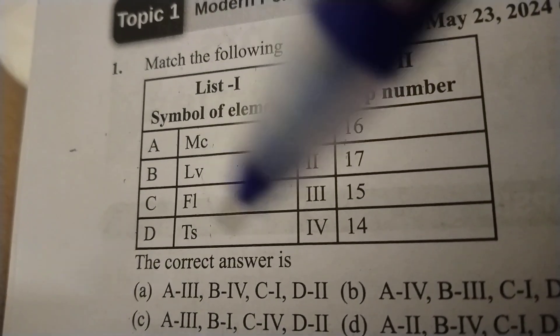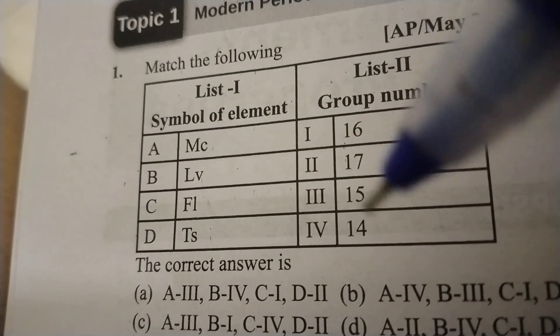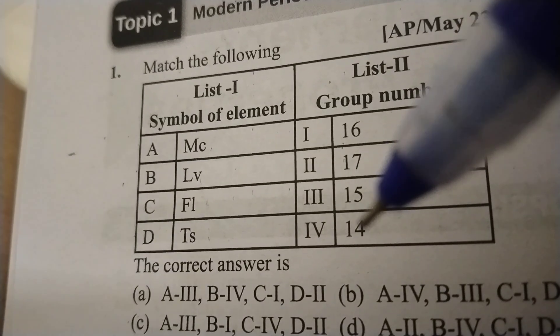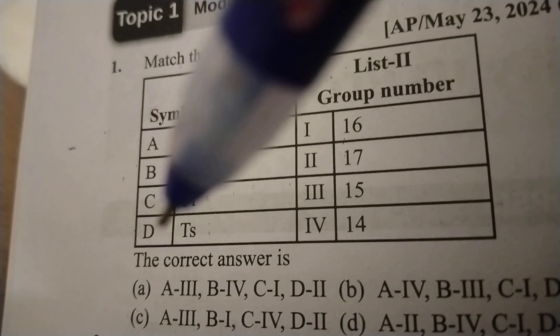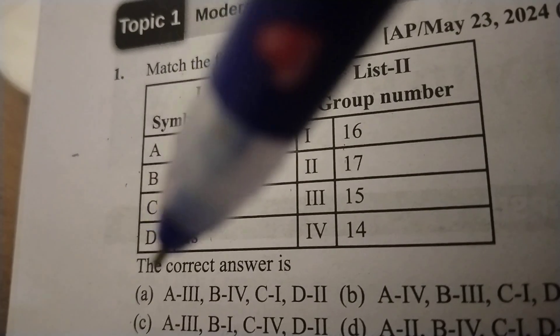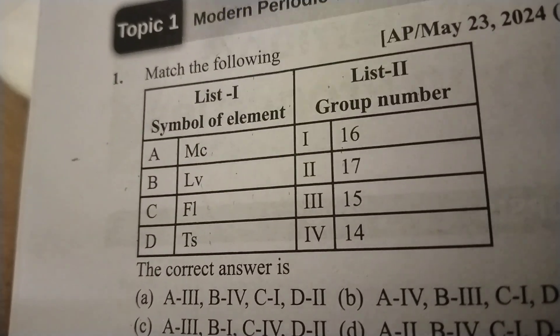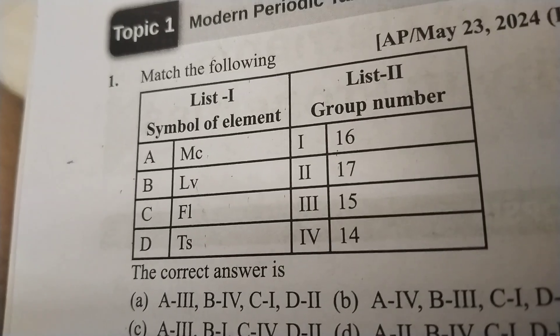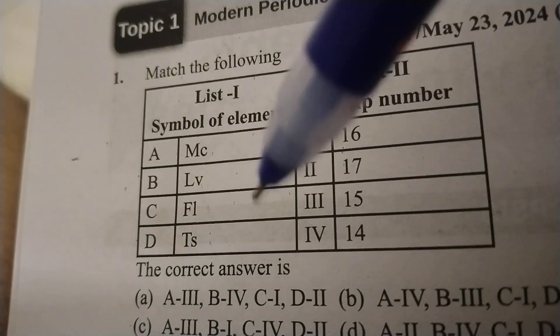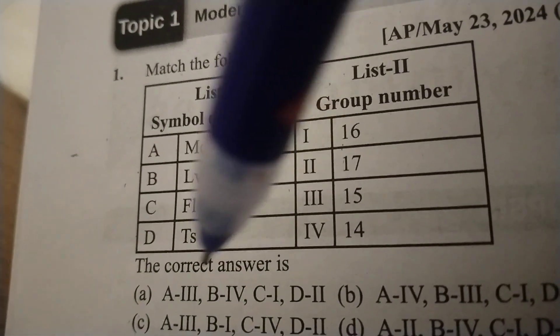14th group means carbon family, please note it. Ts - Tennessine, Tennessine, 117 halogen family. 117 atomic number, 17th group Tennessine.